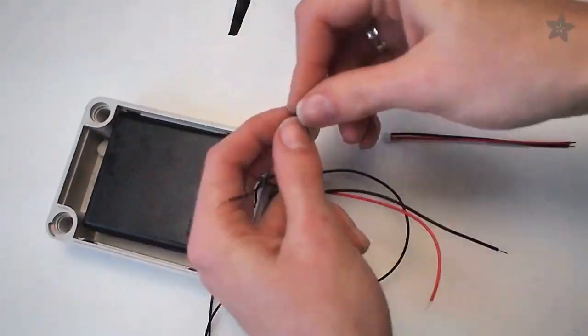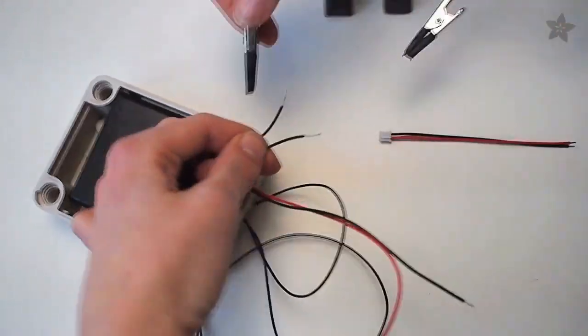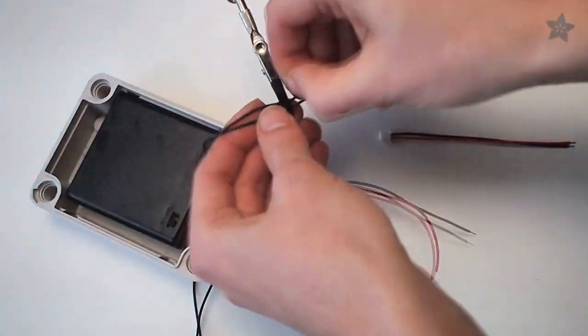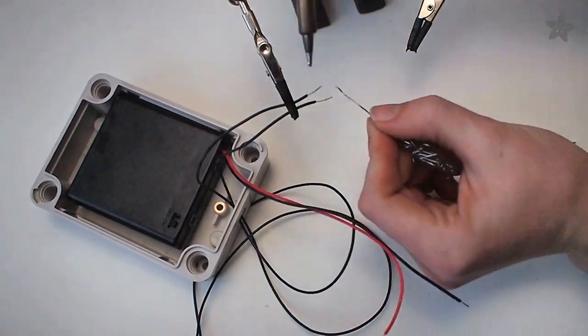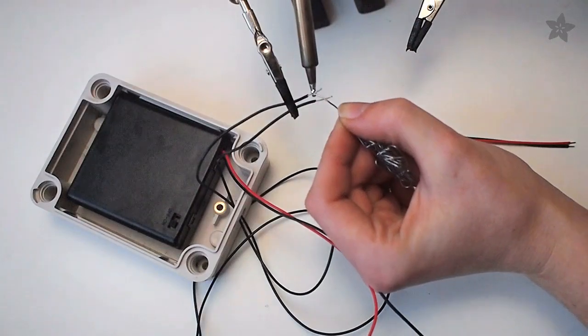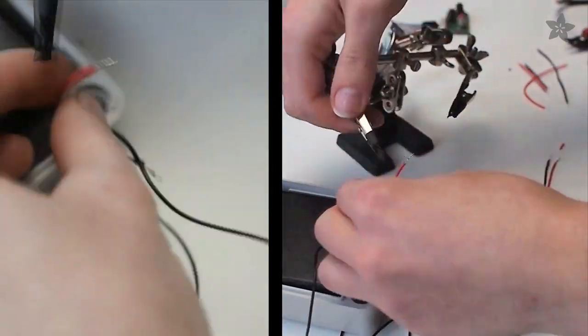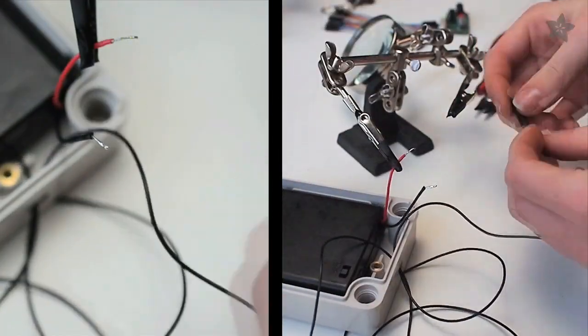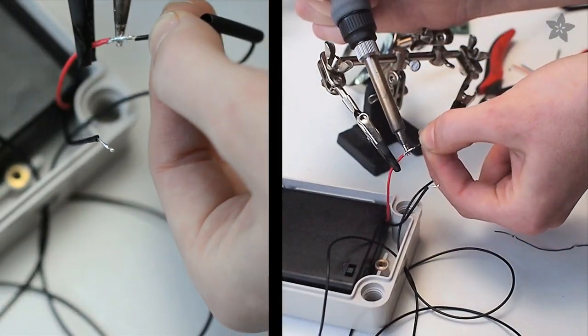Start by wiring up the battery pack inside the weatherproof enclosure. You'll tin the leads of the switch that you've inserted in a hole in the enclosure with a little bit of solder. Do the same to a two pin JSD cable and use your switch to break the power lead.